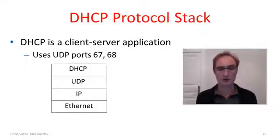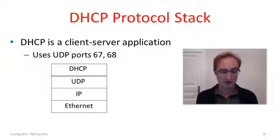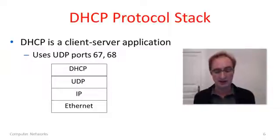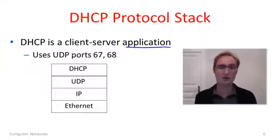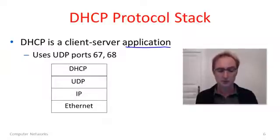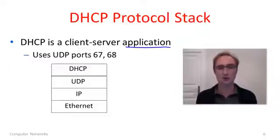Here's the protocol stack for DHCP. DHCP runs as a client-server application between the client on your machine when it's woken up and the server running somewhere in the network. It runs on top of UDP and uses UDP ports 67 and 68 to identify itself. According to the protocol stack diagram, DHCP is actually an application — one of the first applications we're going to look at. You could write DHCP using the socket interface and the datagram API. However from most people's point of view DHCP is a protocol hidden in the system and they wouldn't necessarily think of it as an application.